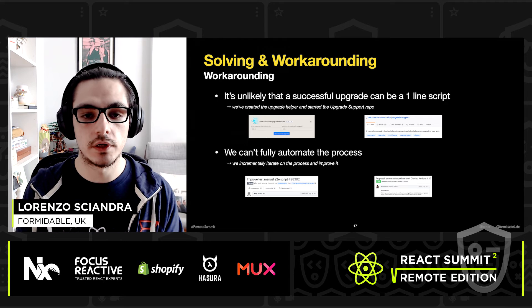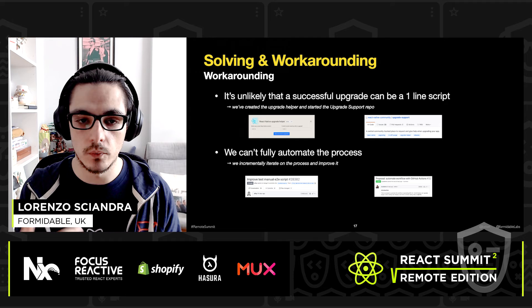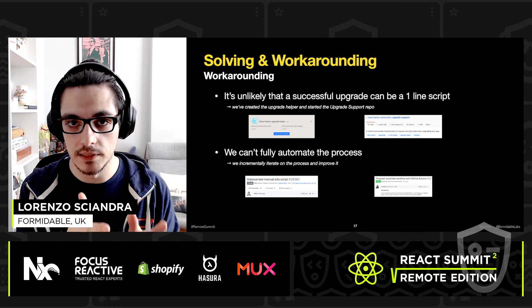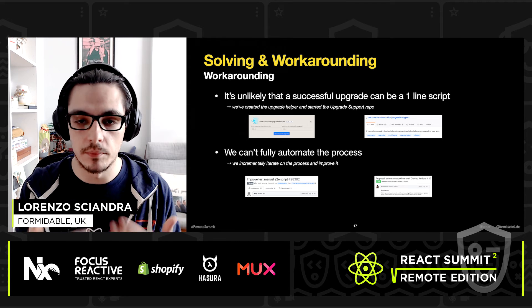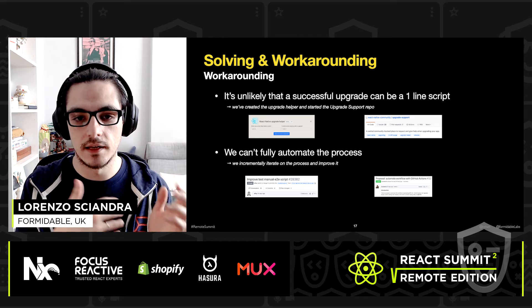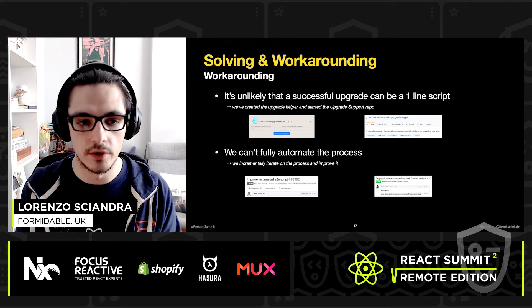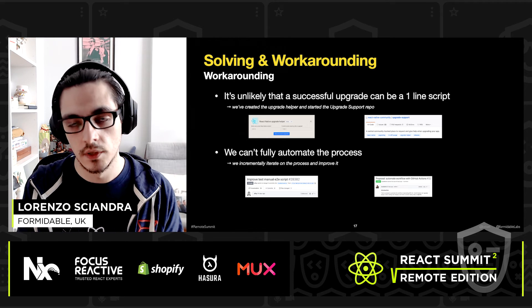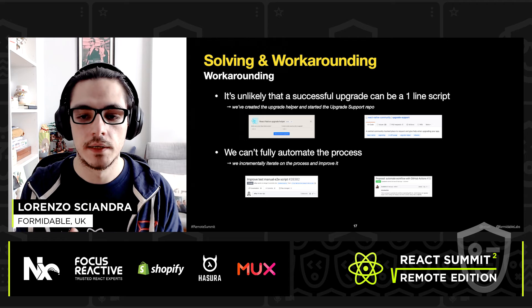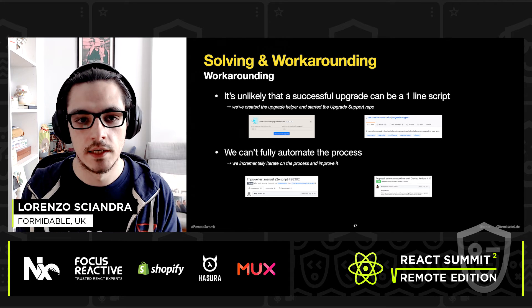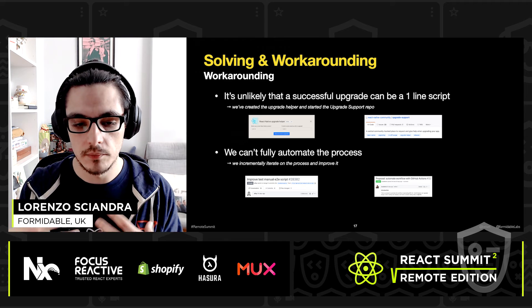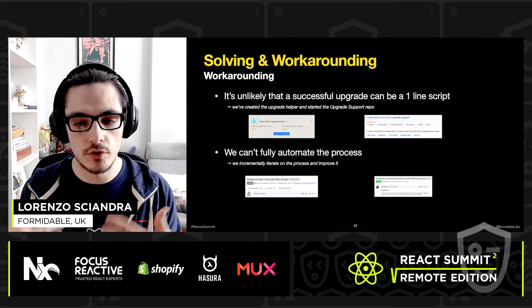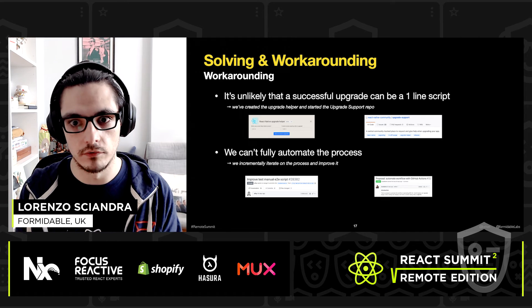We're also aware we cannot fully automate the complete release process, which is why we incrementally iterate on the process. That list has never been final from the start — it's a work in progress, still improving now. For example, Eloi is doing a PR to improve the end-to-end testing script we use for local testing, and Lucas has been doing great work so that generating new diffs for Upgrade Helper will be completely automatic.